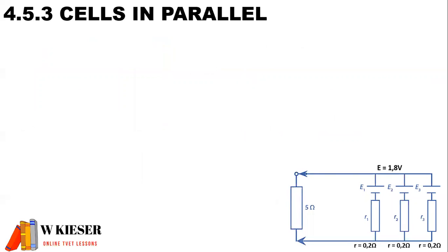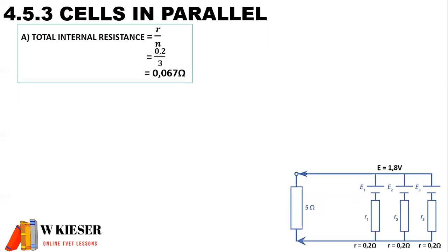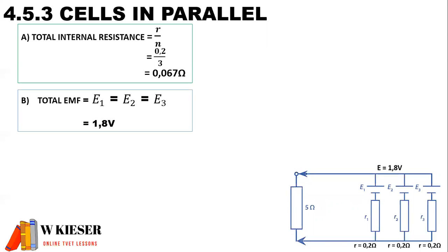In this example, we have three cells connected in parallel. Each cell has an internal resistance of 0.2 ohms and an EMF of 1.8 volts. There is an external load resistance of 5 ohms. To calculate the total internal resistance, it is the value of the internal resistance divided by the number of cells, giving 0.067 ohms. The total EMF, because it's cells in parallel, is the same as the EMF for each cell — therefore, the total EMF is 1.8 volts.